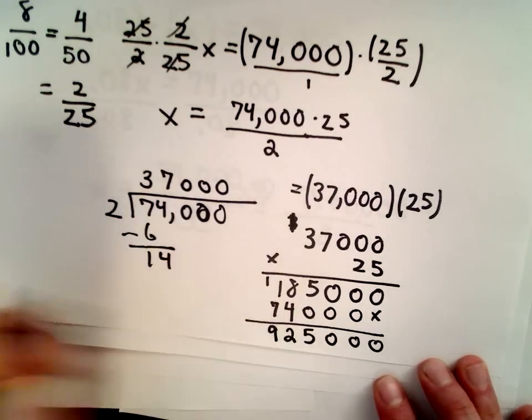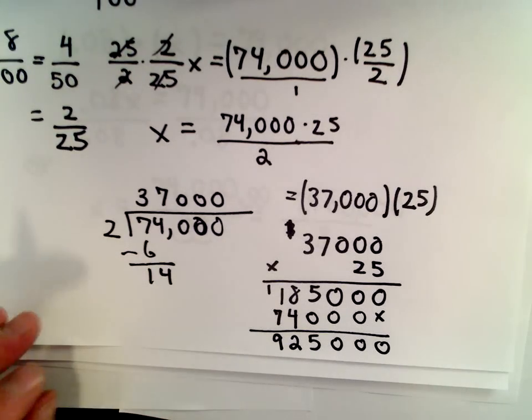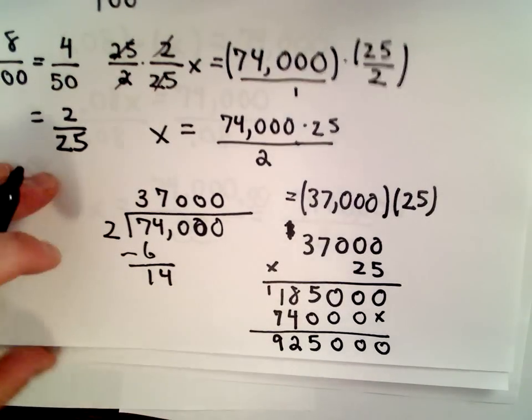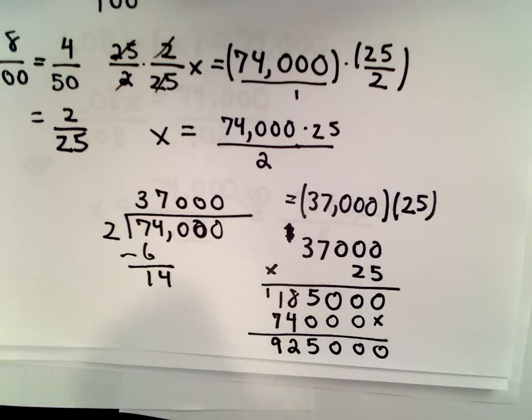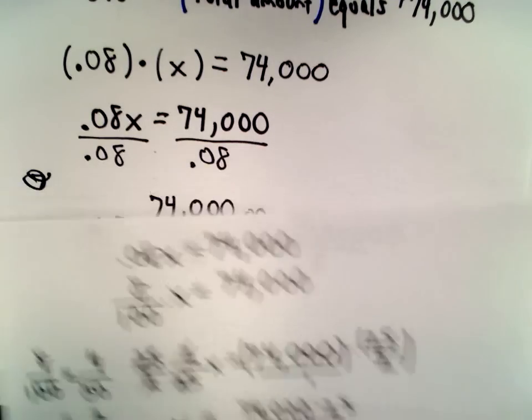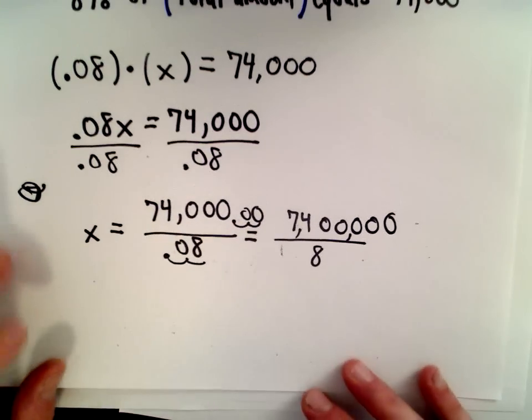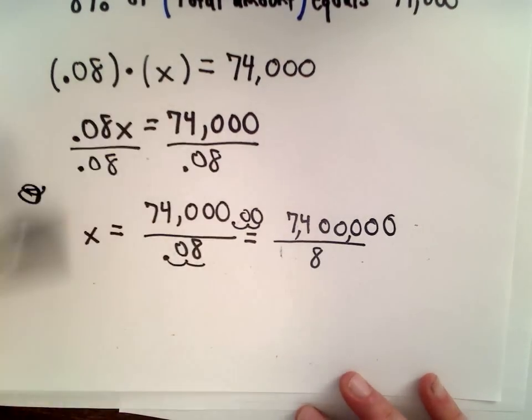5 plus 0 is 5. 8 plus 4 is 12, we'll carry the 1. Again, we're getting $925,000. So, honestly I don't know if that was any easier or not. But again, different way to do it. If you don't like it, forget this way. Again, to me, if it was me doing a test, I would probably do it this way.